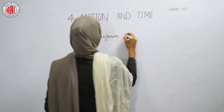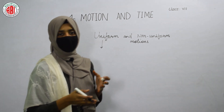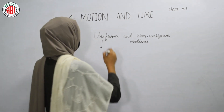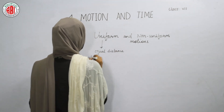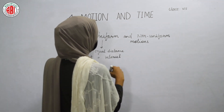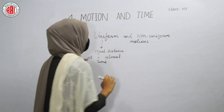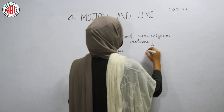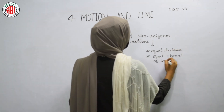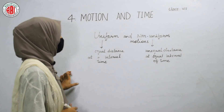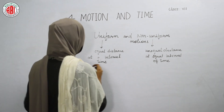Now we are going to study about uniform and non-uniform motion. If an object travels equal distances at equal intervals of time, then that object is in uniform motion. But if the object travels unequal distances at equal intervals of time, then it is said to be in non-uniform motion.